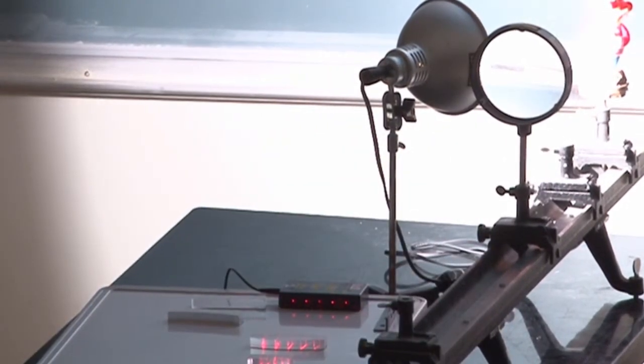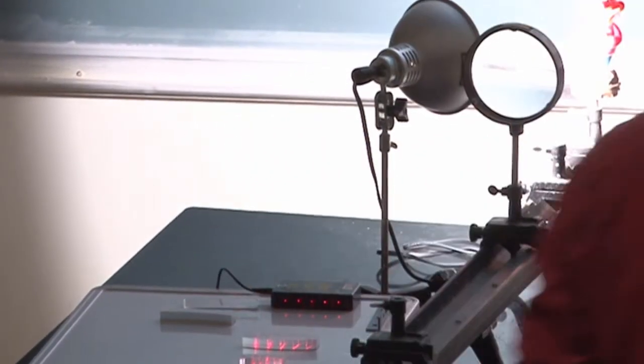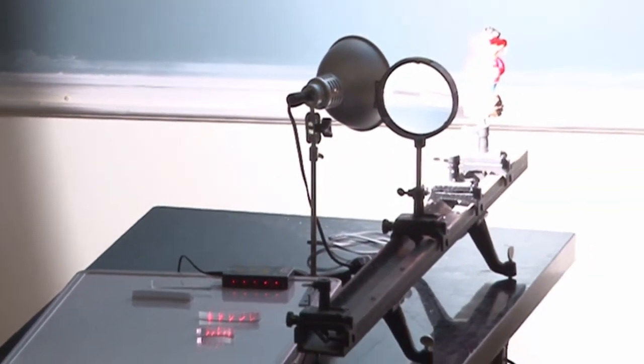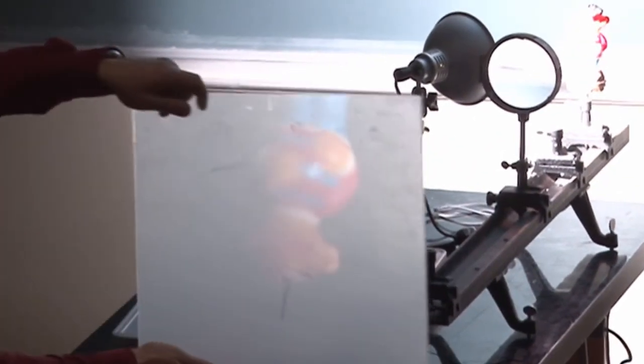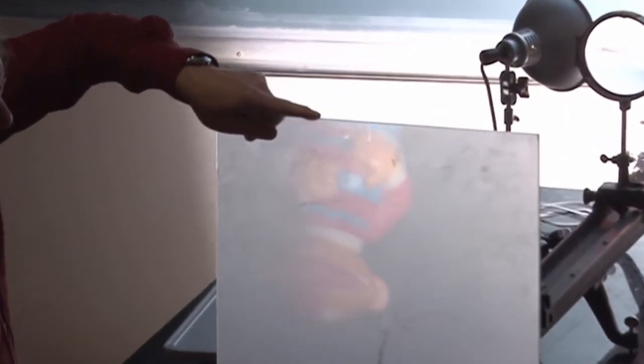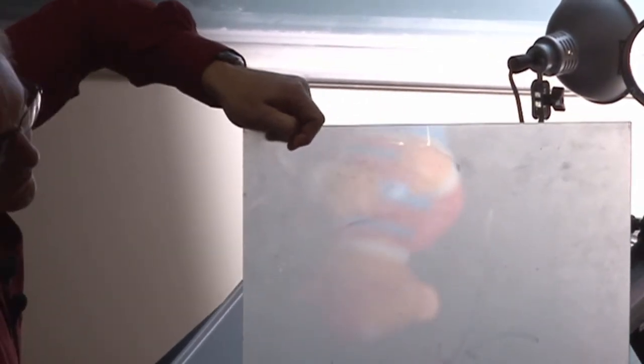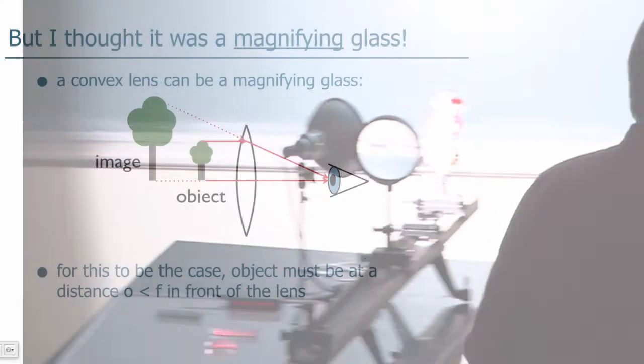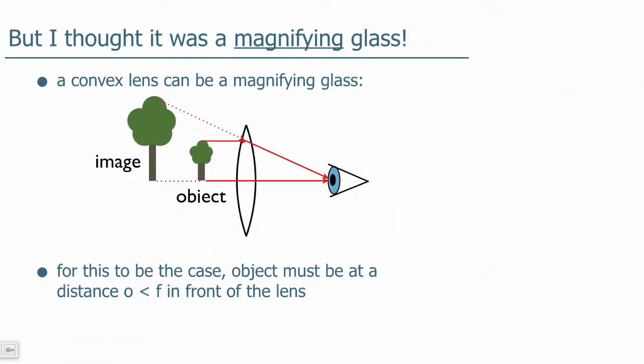Should I turn off the room lights again? I think it's worth it. There you can see a nice, big, there's a big Ernie in there somewhere. Okay? So here we've made a larger image just by changing the distance of the object and the lens. Okay.